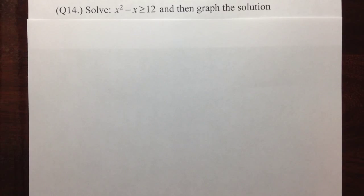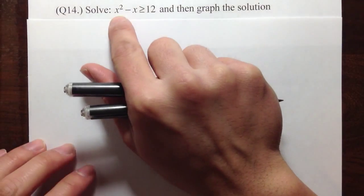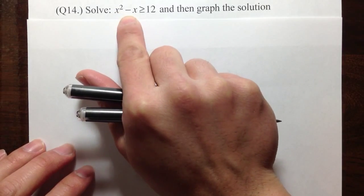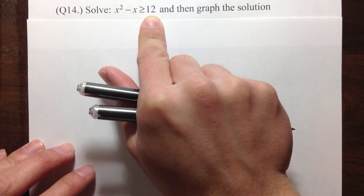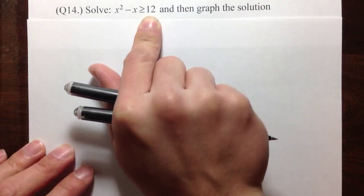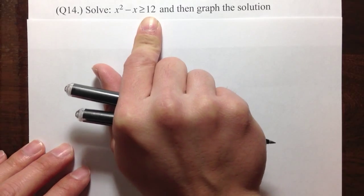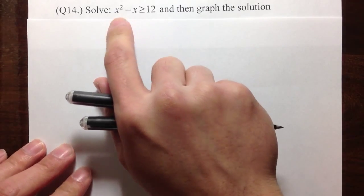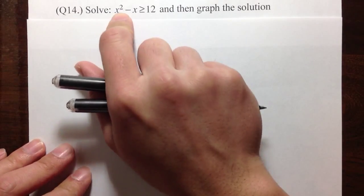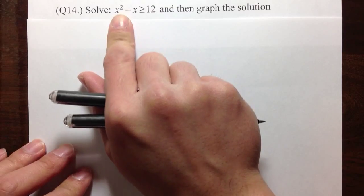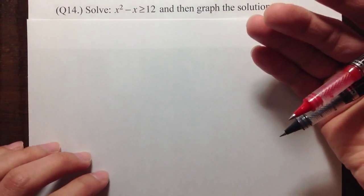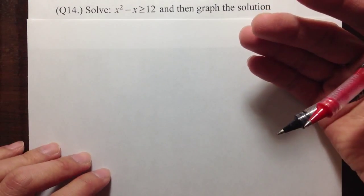I'm going to show you how to solve a quadratic inequality. Here we have x squared minus x is greater than or equal to 12. I'm just going to run through the steps. This method works whenever you have x to the second power, x to the third power, or any higher power in the inequalities.